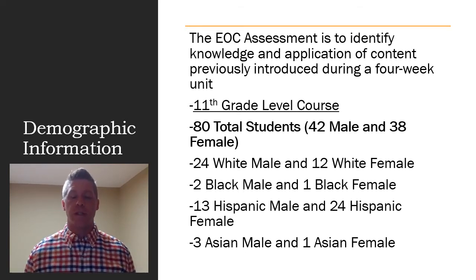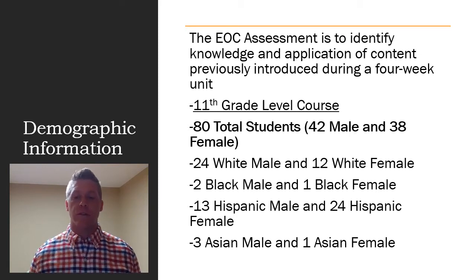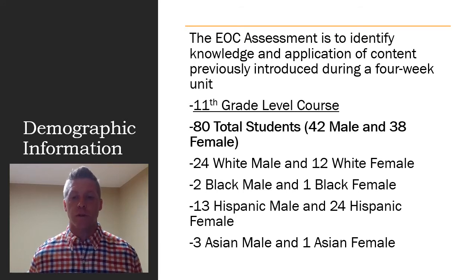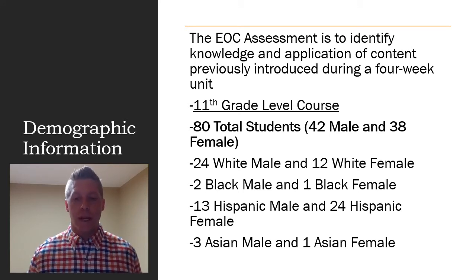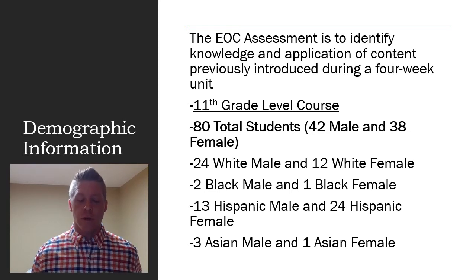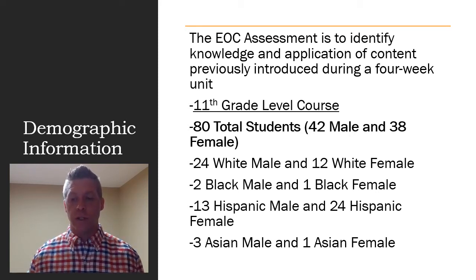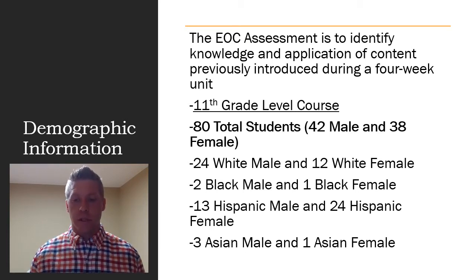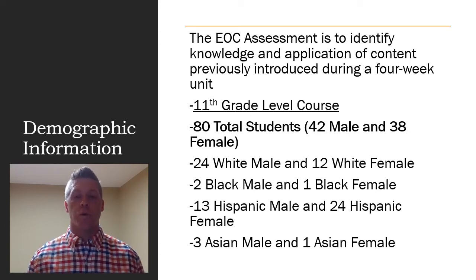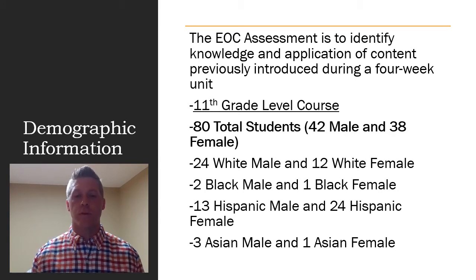This unit was a four-week unit starting with Standard 17, which was the Great Depression, going through Standard 18 New Deal programs, onto World War II. The whole idea is to connect the dots — how the Great Depression led to the need for the New Deal programs, and then how to truly get out of the Great Depression. There's a connection to World War II and all the implications involved with a second global war. This is an 11th grade level course.